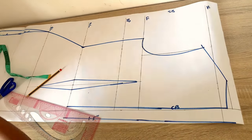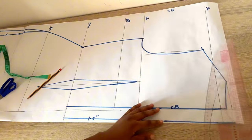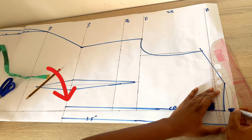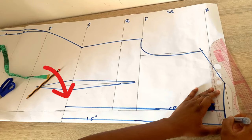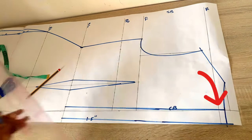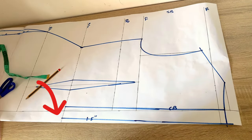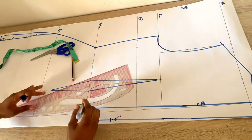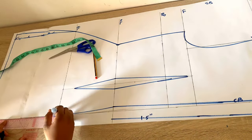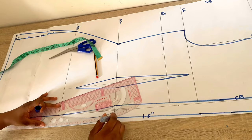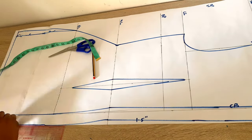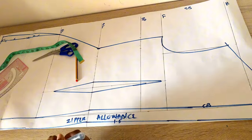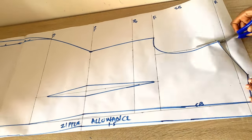I snatched the zipper allowance to reduce zipper bulge. What I did was come in from the waistline by 0.5 inch on both sides and connect each side to the top of the dress, then connect the lower part of the dress back in — this is the new zipper allowance. I'll label it and go ahead and cut this out.